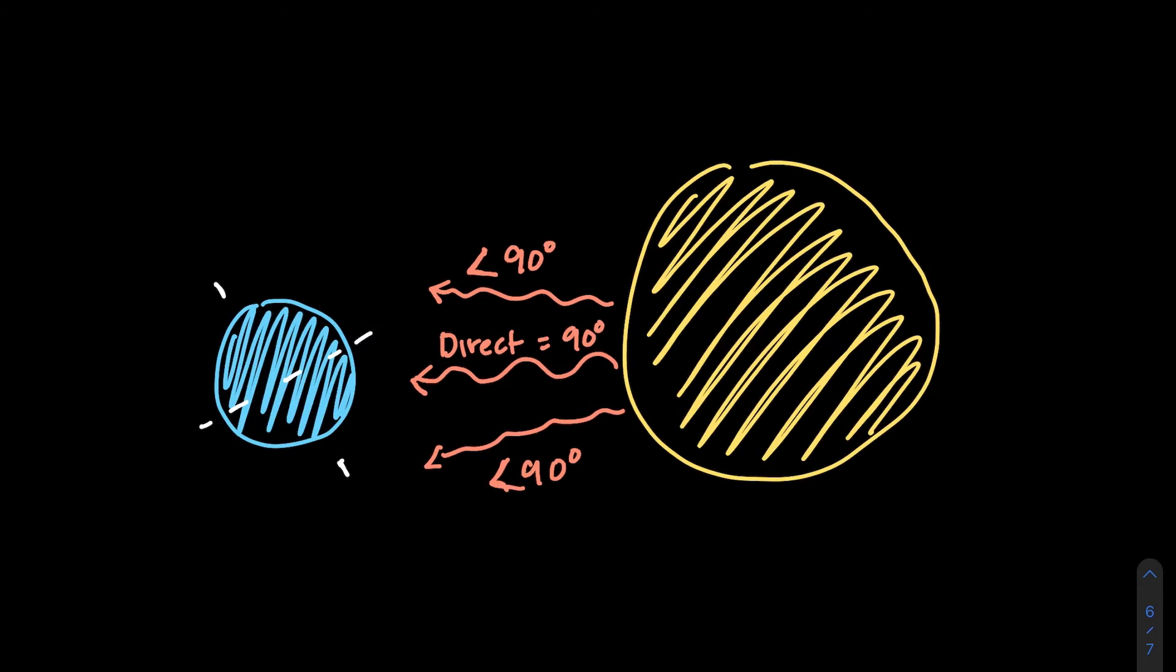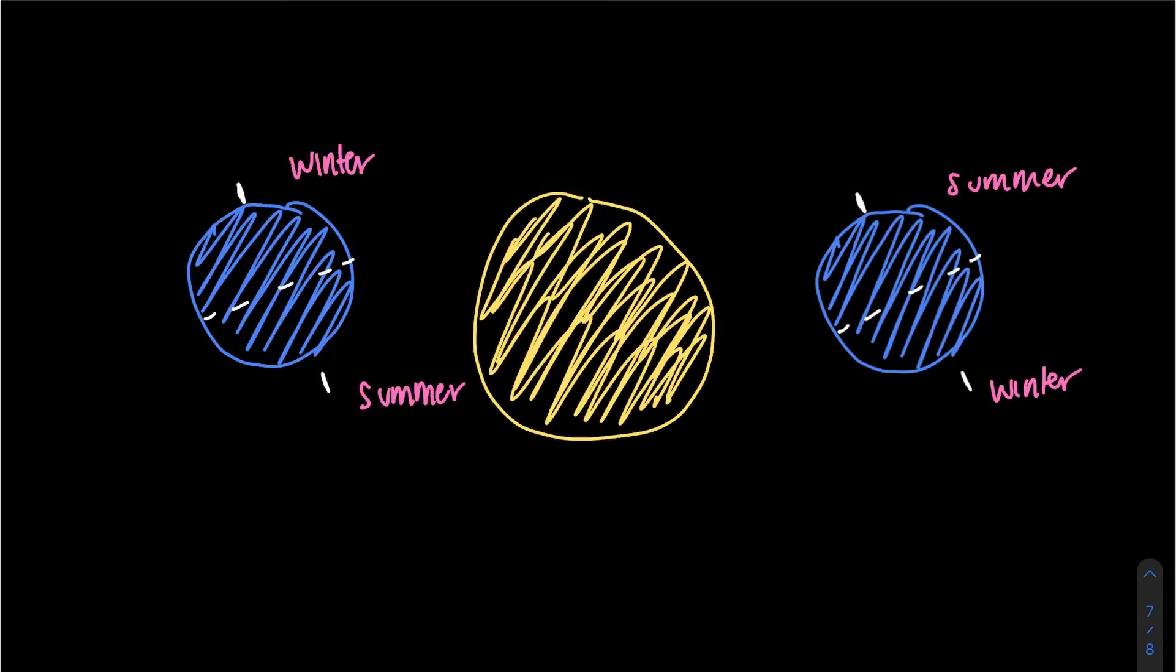We can also use the Earth's poles to identify which season might be occurring. Summer in the north and winter in the south actually occurs at the same time. Northern and southern hemispheres experience opposite seasons.